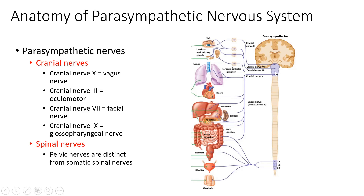Cranial nerve 3, the oculomotor nerve, goes to the lacrimal gland of the eye to help with tear secretion. Cranial nerve 7 also goes to the lacrimal gland for tear production, and additionally innervates the submandibular and sublingual salivary glands — two of our three salivary glands. Cranial nerve 9, the glossopharyngeal nerve, serves the third salivary gland, specifically the parotid gland, which is the largest of the three salivary glands.